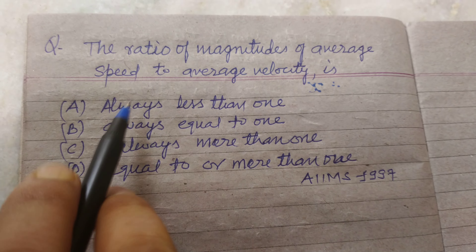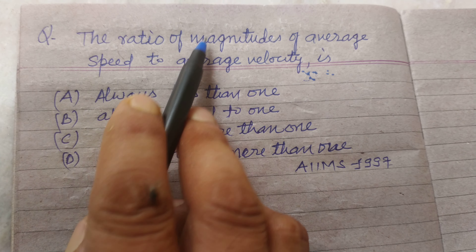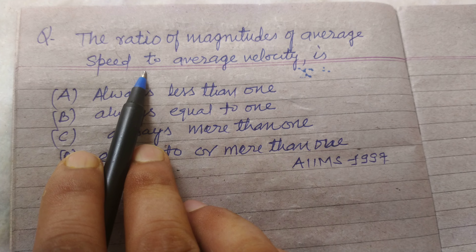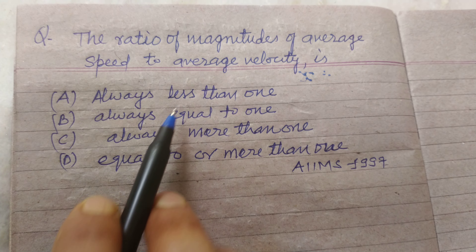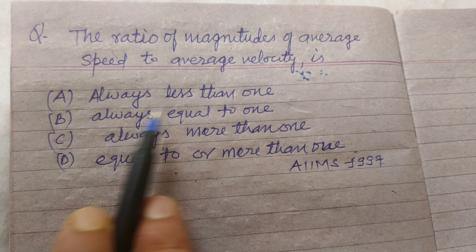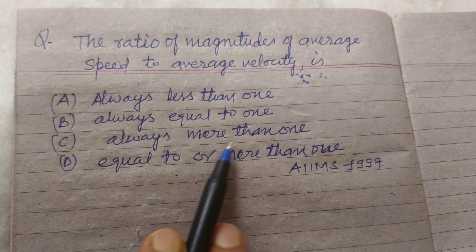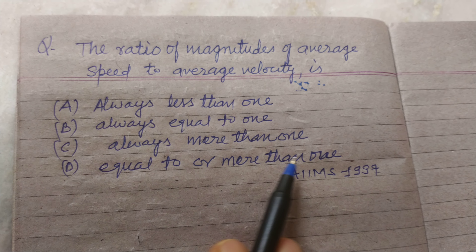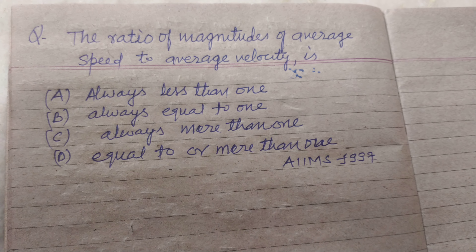The question is saying that the ratio of magnitudes of average speed to average velocity is: always less than 1, always equal to 1, always more than 1, or equal to or more than 1.